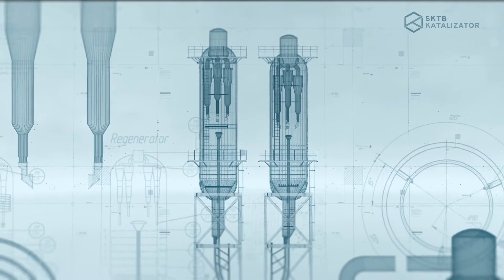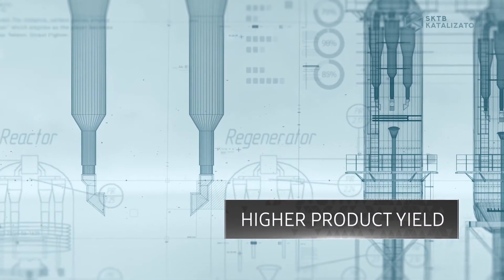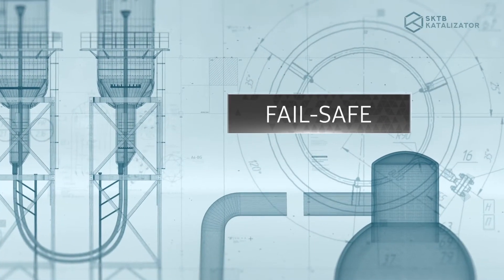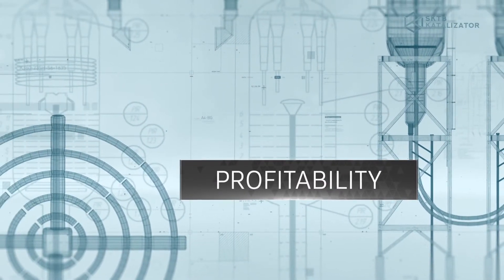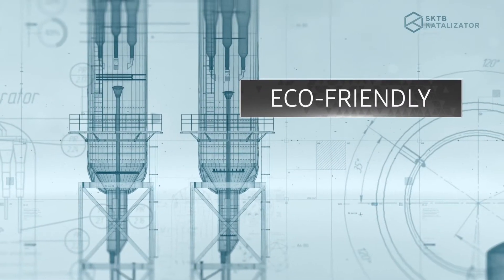SKTB Catalyzator uses its own patented solutions for each unit of the installation, which allows to boost the product yield, increase the trouble-free operation time of the plants, reduce catalyst losses, which ultimately will increase the profitability of production. Reducing catalyst losses makes the process more eco-friendly.